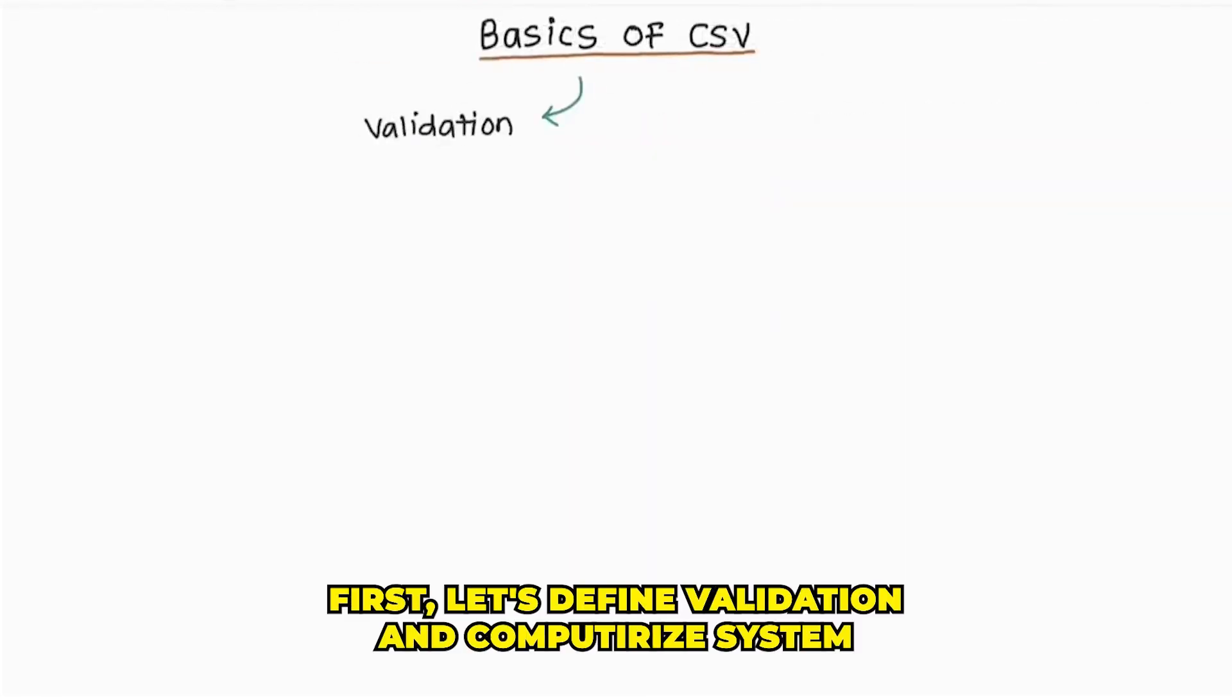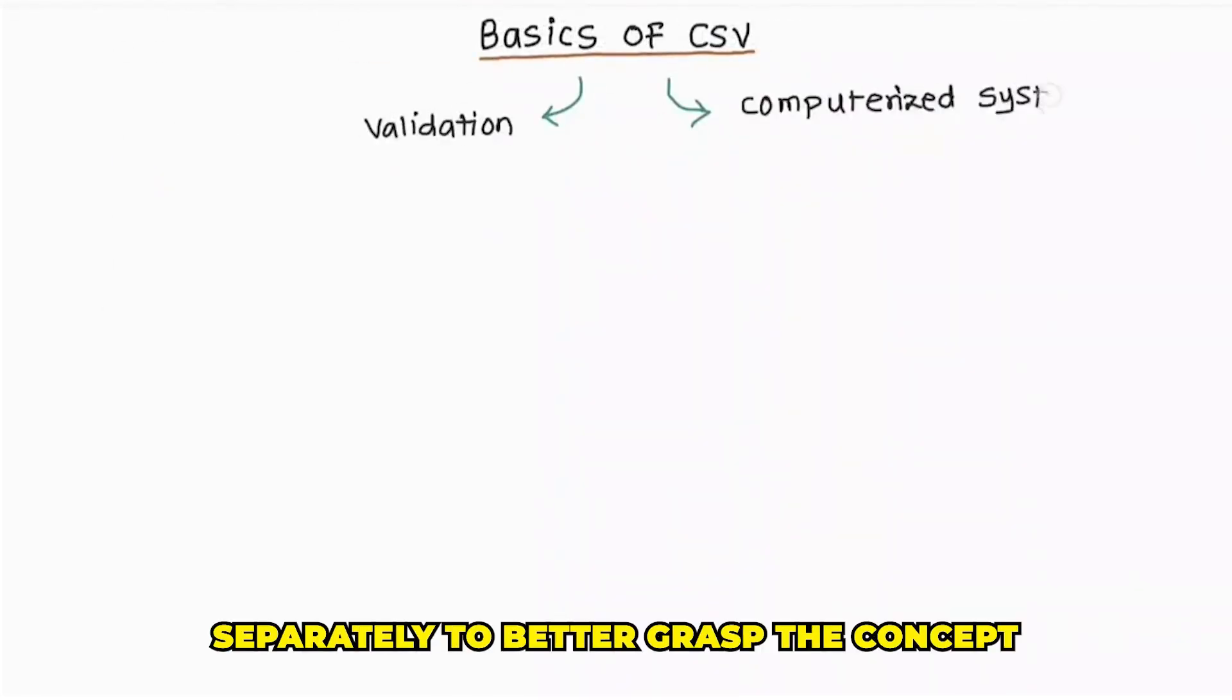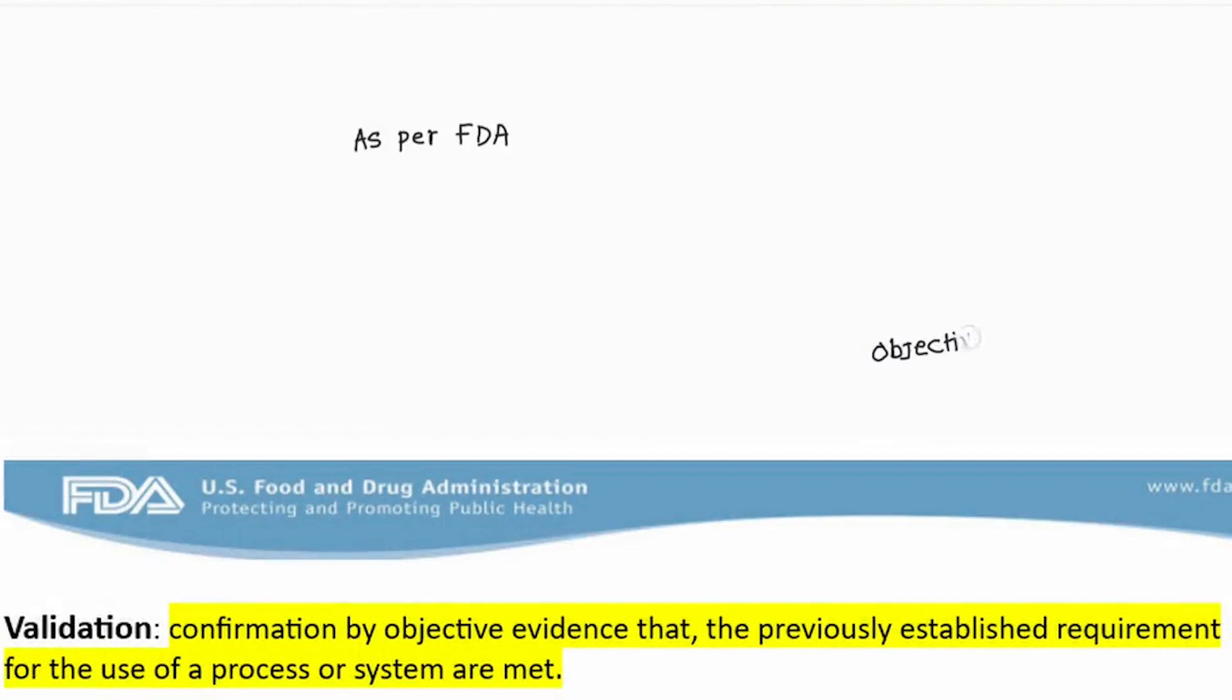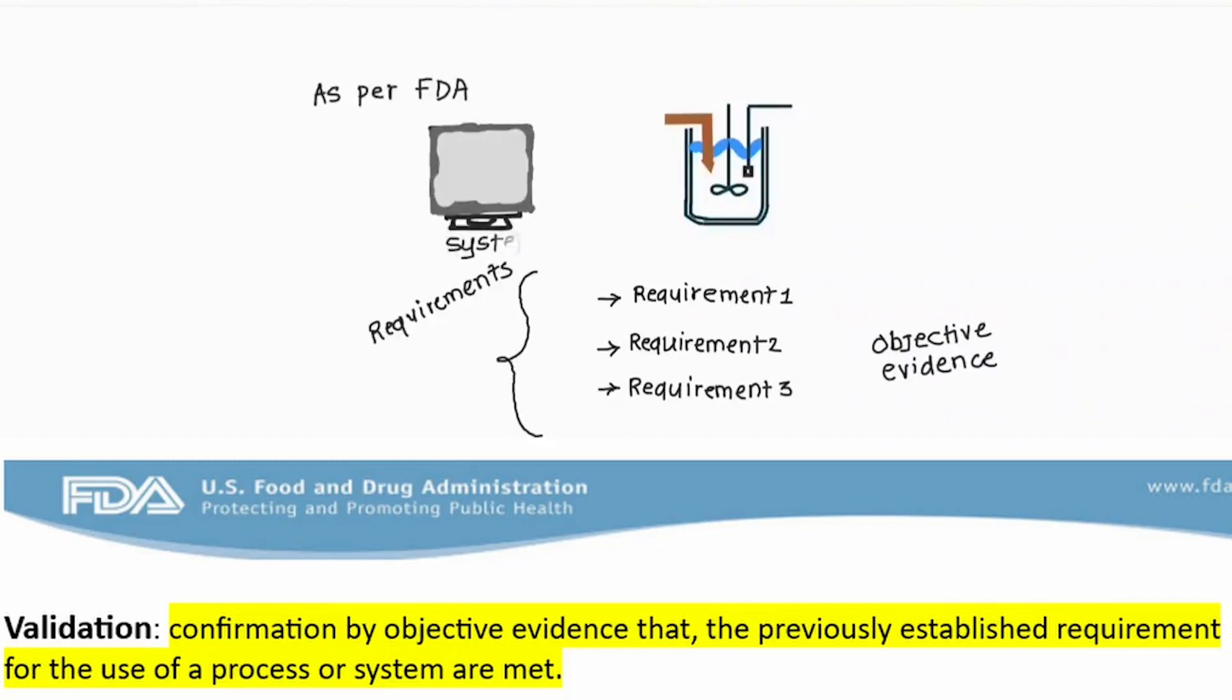First, let's define validation and computerized systems separately to better grasp the concept of computer system validation. According to FDA, validation is confirmation by objective evidence that the previously established requirements for the use of process or system are met.